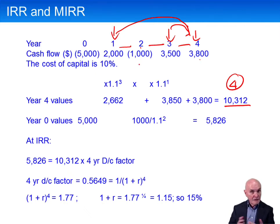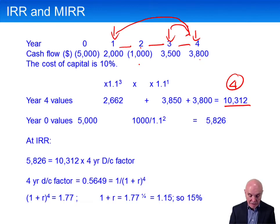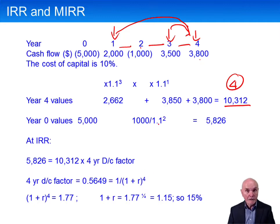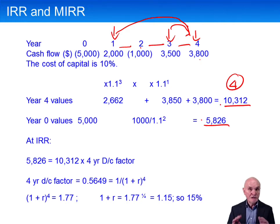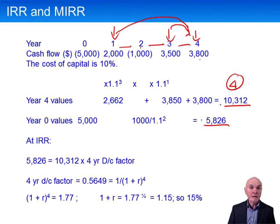For the outflows, we discount those back to time zero. The 5,000 at time zero is already at time zero. We just need to bring the other outflow back by two years, discounting at 10%: 1,000 divided by 1.1, divided by 1.1 — this comes to 5,826. So we can simplify this complex set of flows to one negative flow of 5,826 going out now and one positive flow of 10,312 appearing at time four.